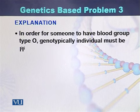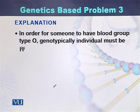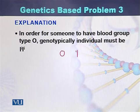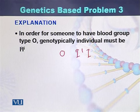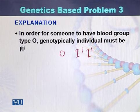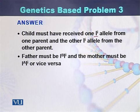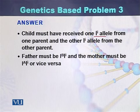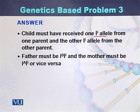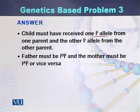In order for someone to have blood group O, the person genotypically should be ii — homozygous recessive for the O allele. So the child must receive one i allele from each parent. This means the child must receive one O allele from the father and one O allele from the mother, which means both the father and the mother must be genotypically heterozygous.